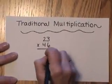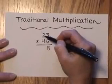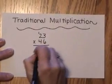you would say 6 times 3 is 18, 8, carry the 1. 6 times 2 is 12, plus 1 is 13.